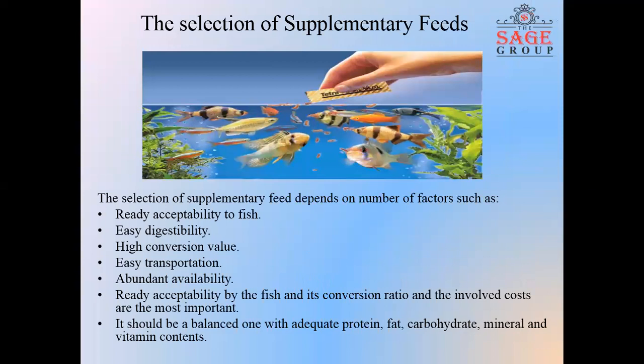The selection of supplementary feed depends on a number of physical factors such as ready acceptability to fish, easy digestibility, high conversion value, easy transportation, abundant availability, and its conversion ratio and cost. It should be a balanced feed with adequate protein, fat, carbohydrate, mineral, and vitamin contents.